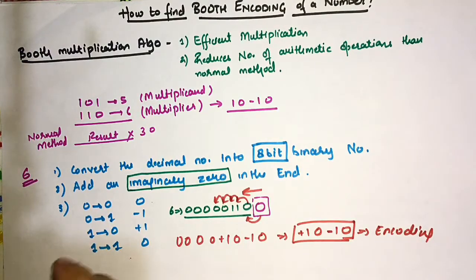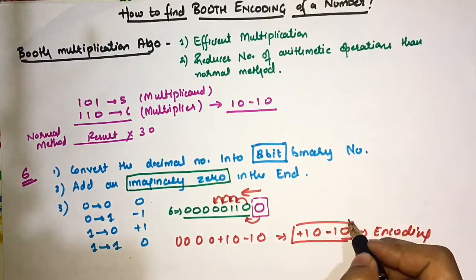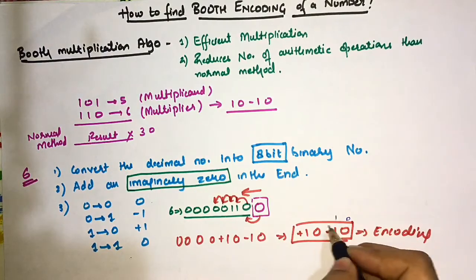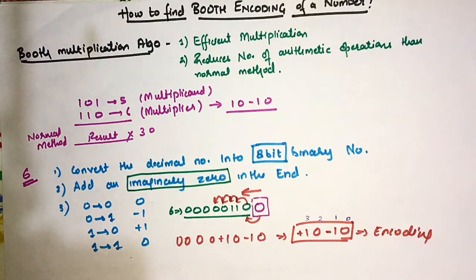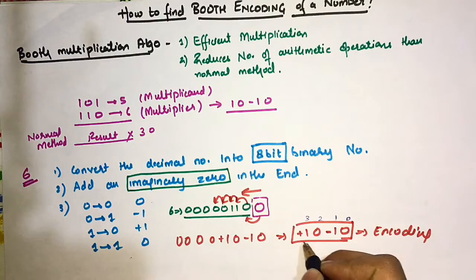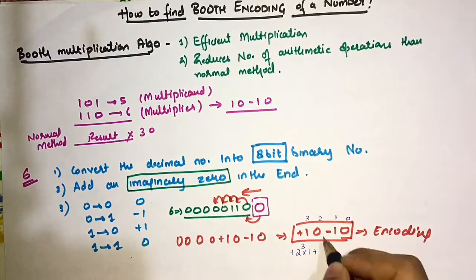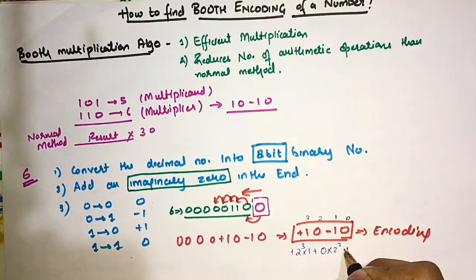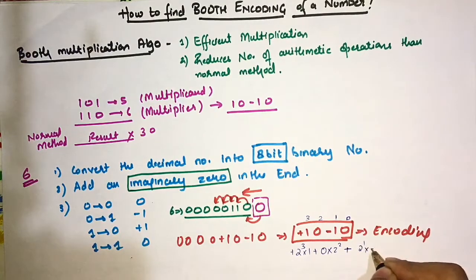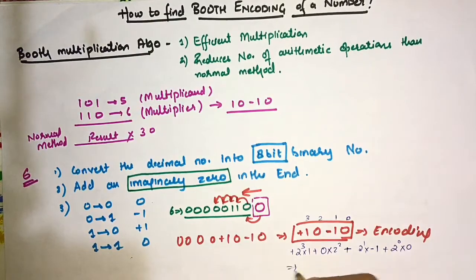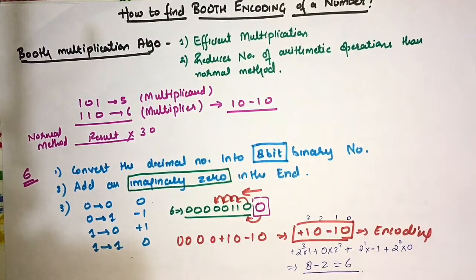To verify the encoding is correct, treat it like binary-to-decimal conversion. Positions are 0, 1, 2, 3. The calculation is: (+1)×2³ + (0)×2² + (−1)×2¹ + (0)×2⁰ = 8 − 2 = 6. So yes, this is how we find the Booth encoding of a number.